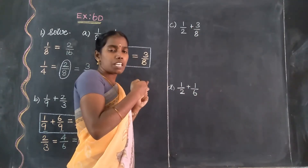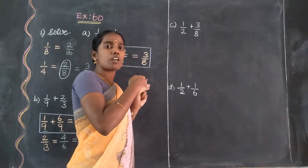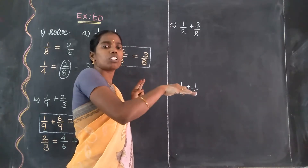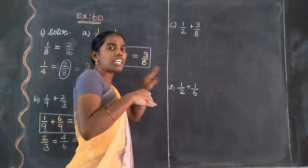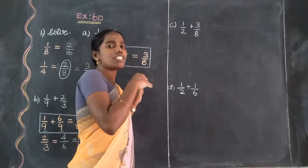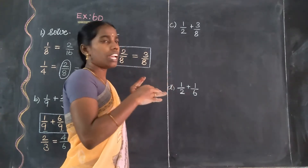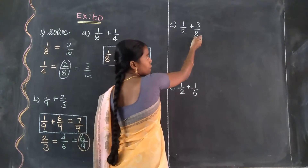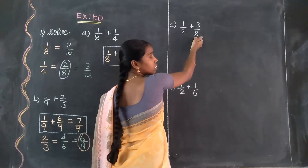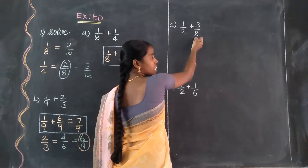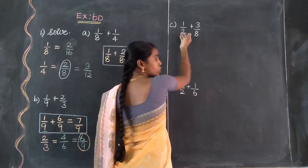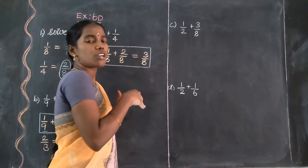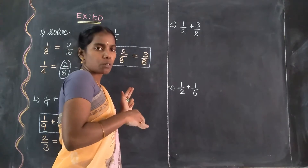The highest value is the base, and the lowest value changes to match the highest value. The denominator highest value is 8, so we change it to 8. The second fraction's denominator value is already 8, so that stays.